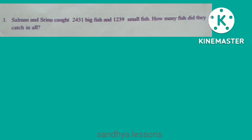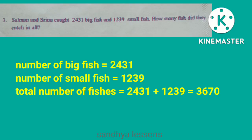Problem 3: Salman and Sreenu caught 2,431 big fish and 1,239 small fish. How many fish did they catch in all? Solution: Number of big fish is 2,431. Number of small fish is 1,239. Total number of fishes is 2,431 plus 1,239, that is equals to 3,670.